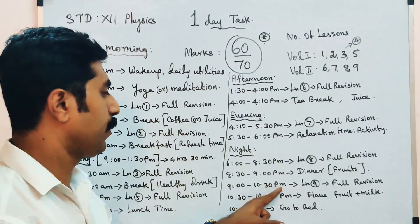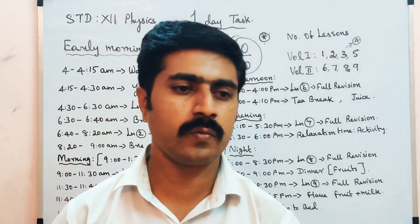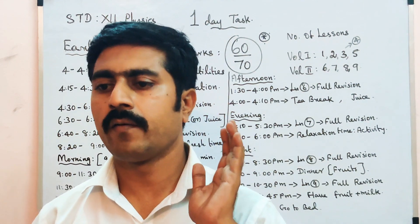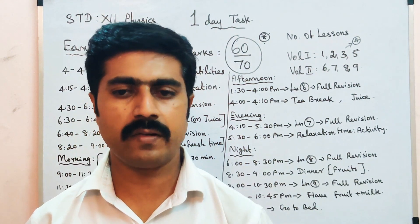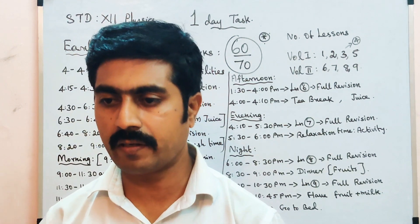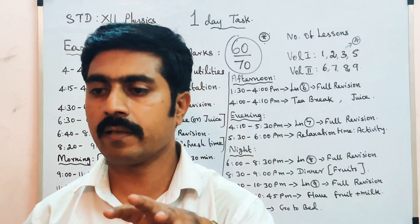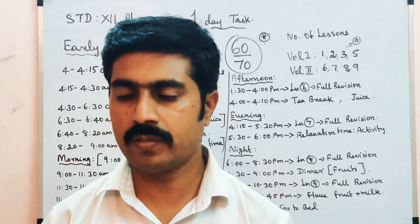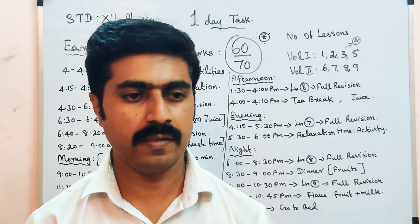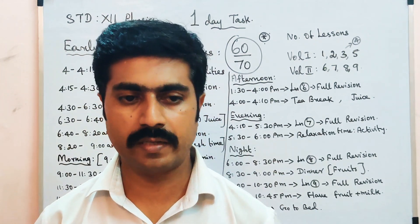9:00 to 10:30 PM — one and a half hours. Study the 9th lesson. For average students: Half-Rectifier, Full-Rectifier, De Morgan's theorem, Transistor as Amplifier. Learn more about practicals — Transistor Characteristics: Input Characteristics, Output Characteristics, and Transfer Characteristics.